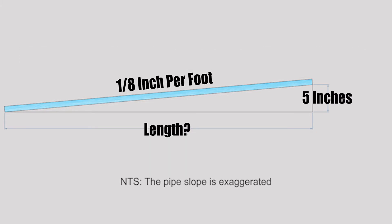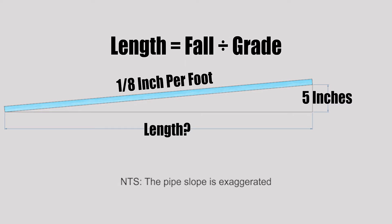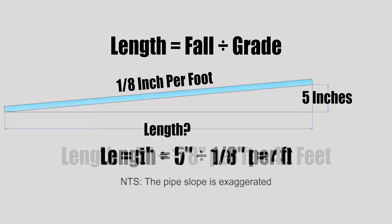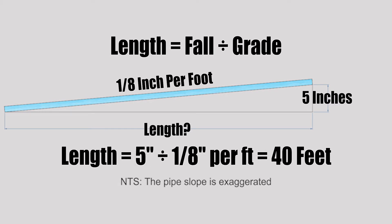For the next example, a pipe drops five inches at an eighth of an inch per foot grade, and we want to find the overall length. Using the rearranged formula — length equals fall divided by grade — the fall is five inches and the grade is one eighth of an inch per foot. Five divided by one eighth equals 40 feet of horizontal length.